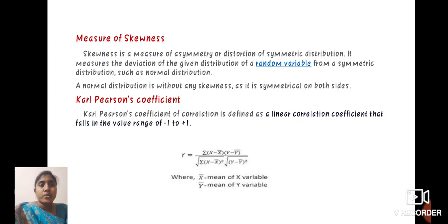Next, we define a measure of skewness. Skewness is a measure of asymmetry or distortion of an asymmetric distribution. It measures the deviation of a given distribution of a random variable from the symmetric distribution, such as a normal distribution. A normal distribution is without any skewness as it is symmetrical on both sides.